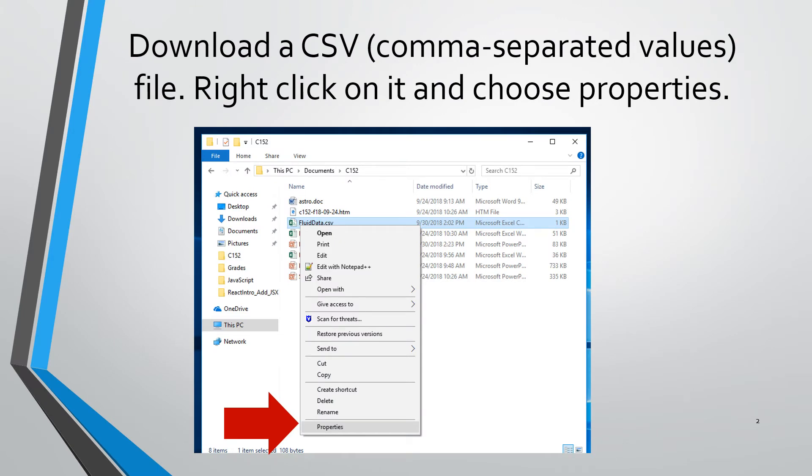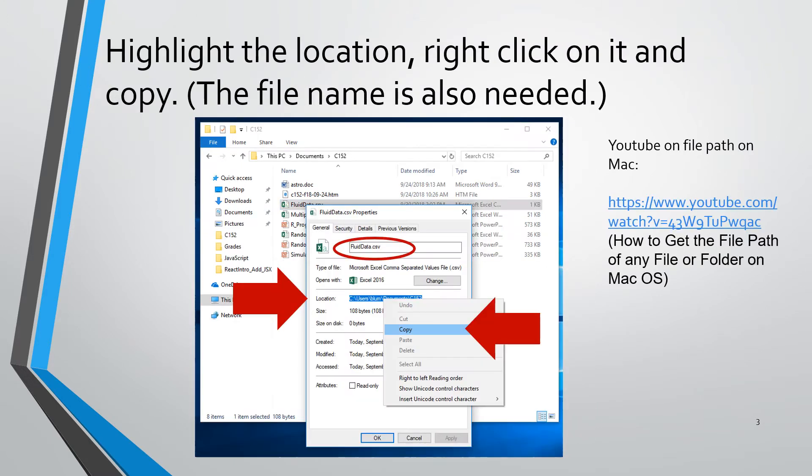In this first part, I'm going to assume that you already have a CSV file downloaded and somewhere on your computer. In R, we're going to need to know that file's path. So if you're on a Windows system, right click on the file and choose properties. When that file's properties dialog box pops up, find the location, highlight it, and then right click and copy it.